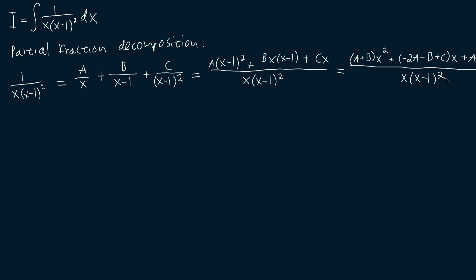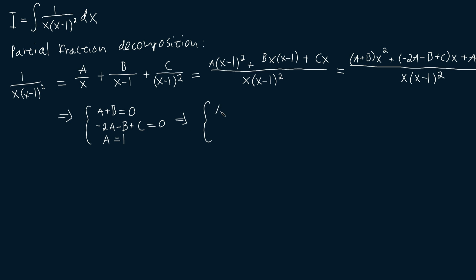This then implies that A plus B must be equal to 0, since there's no x squared term on the left-hand side. Accordingly, minus 2A minus B plus C has to also be equal to 0, since there's no x term on the left-hand side. And our constant term will be equal to 1, so A is equal to 1. B has to be equal to minus 1, since A plus B has to equal 0. And C has to be equal to 1, since minus 2 minus minus 1, so plus 1 plus 1 is equal to 0.